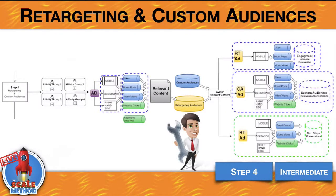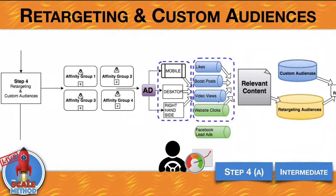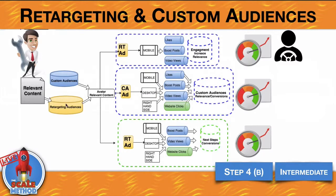So let's take a deep look at retargeting and custom audiences. As we're targeting our affinity groups with content marketing — testing mobile, desktop, and right-hand side for likes, boost posts, video views, and website clicks — we're going to be able to put people into custom audiences. Custom audiences are either audiences you upload into Facebook with emails or phone numbers, or your retargeting audiences from website visitors. Once you get people into a retargeting audience, your main driver is going to be engagement. In retargeting ads, use mobile for likes, boost posts, and video views to increase engagement — not to get people back to your website, but to increase engagement and relevancy score.